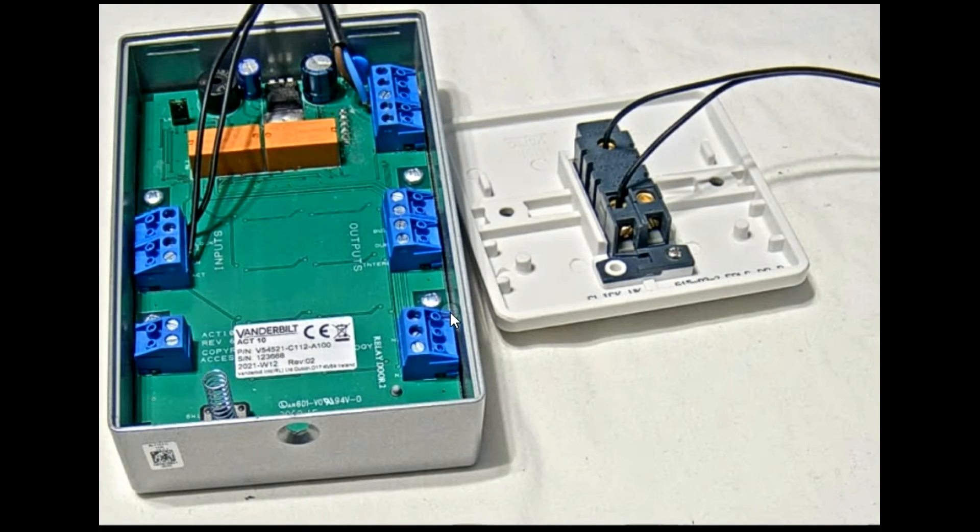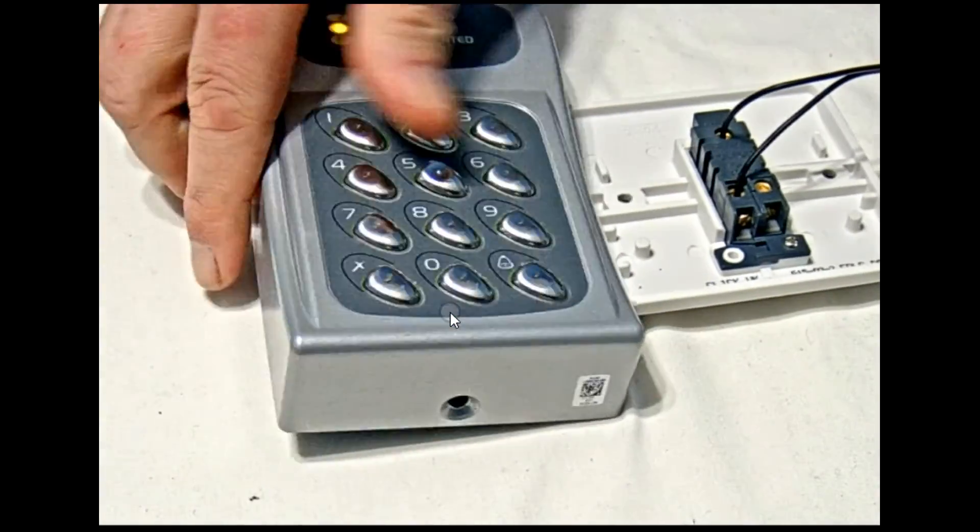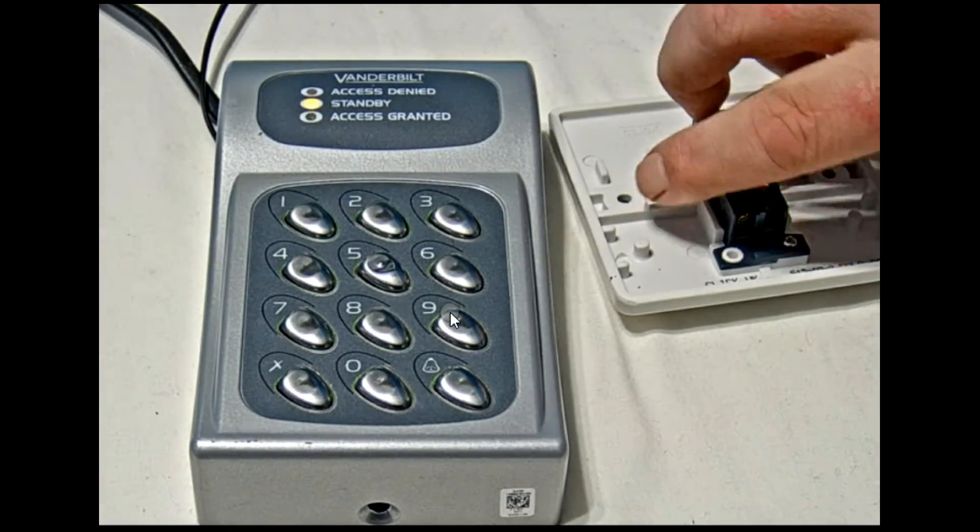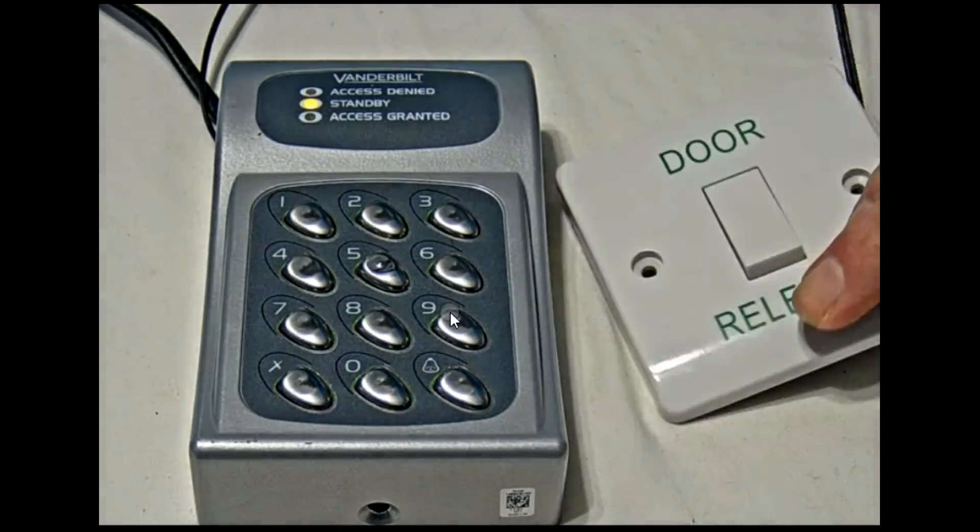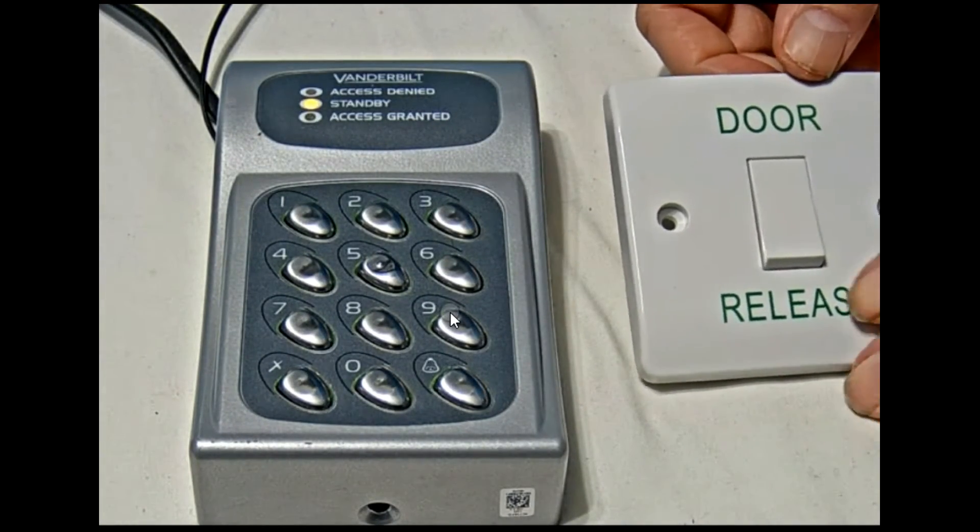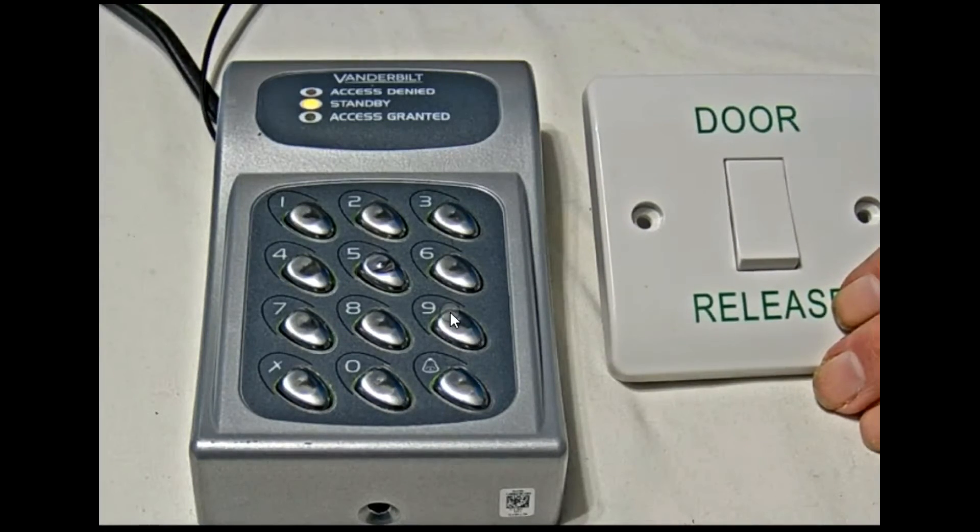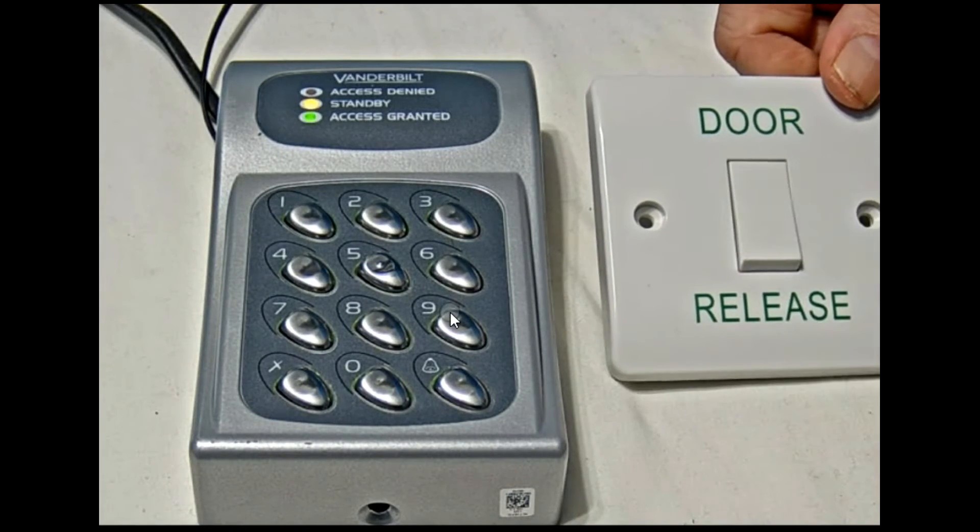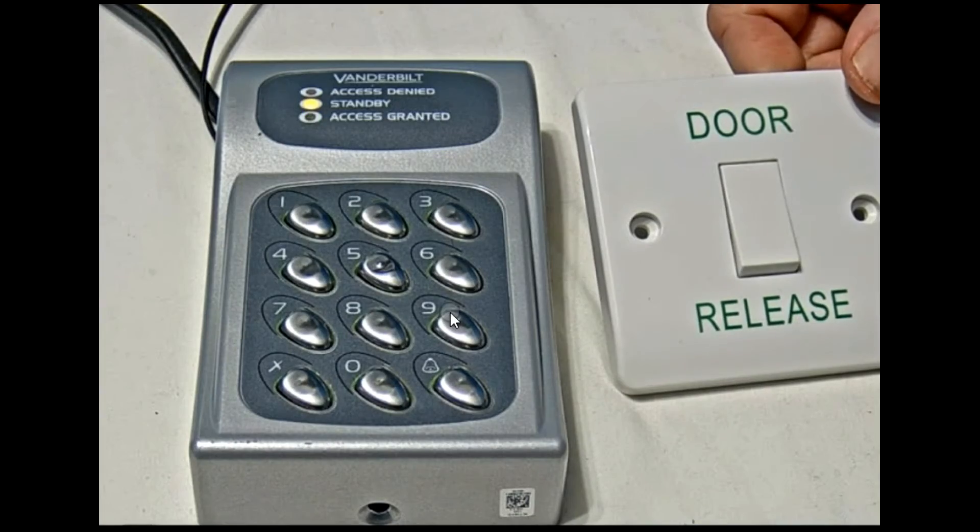So let's have a look, see how it works. I flip the keypad over, and hopefully this should work straight away. And there we go. So now if I press the exit button, then you should see the access granted light come on, showing that it's worked. And there you go, the green access granted lights on, and it's re-locked.